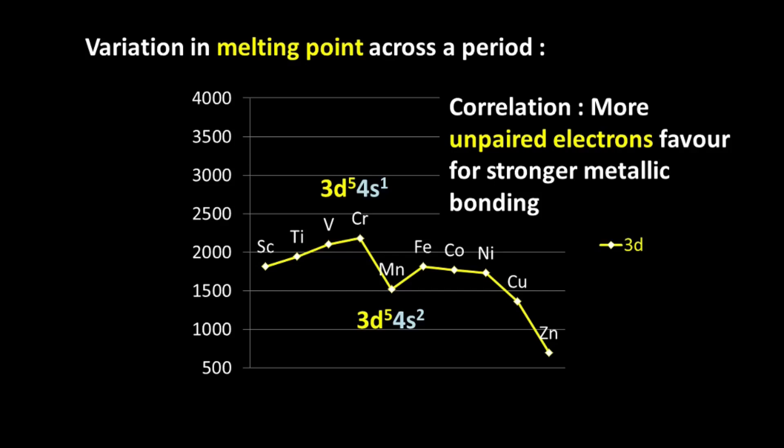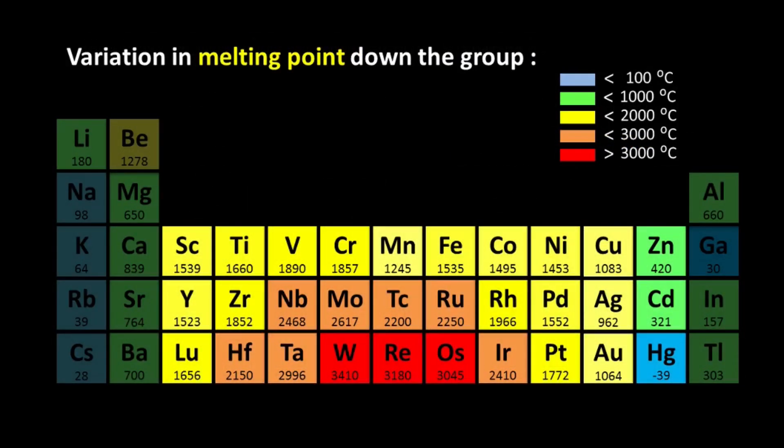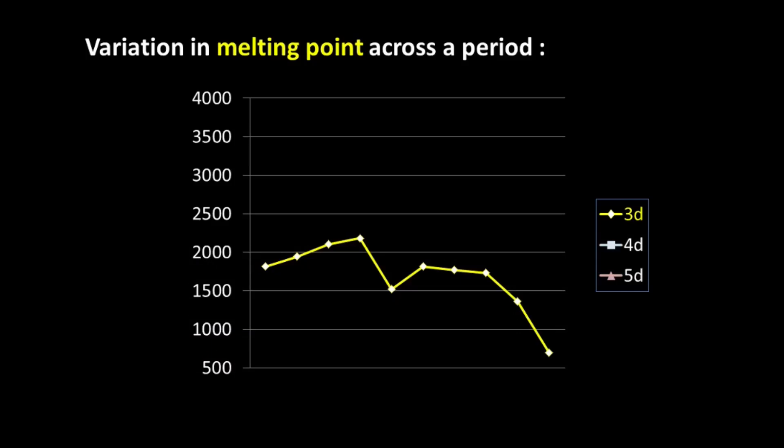So now that we have seen how the melting point varies across the 3D series, what about the 4D and the 5D? Well, even out here the melting point first increases, reaches a maxima around the middle of the series and then decreases. Just like in the 3D series where the maxima happens with chromium, in the 4D series, the maxima happens with molybdenum which is immediately below chromium. And for the 5D series, the maxima is at tungsten.